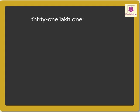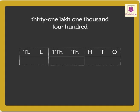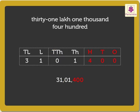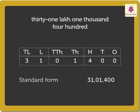Now let us solve one more example. Write 31,14,000 in the standard form. First, write the number in the place value chart as 3, 1, 1, 4, 0, 0, 0. Now insert commas between the periods to get the standard form: 31,14,000.